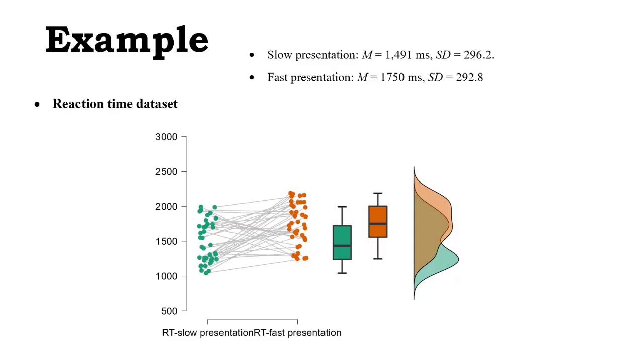This is the data of another fake data set of reaction time data set. We pretend that we had two conditions in a memory task. We have slow presentation of stimuli and fast presentation of stimuli, participants went through both conditions, and we've got the slow presentation of stimuli condition. It's in green, represented by green in the graph, and the fast presentation is represented by orange, and we've got in the graph the connections,